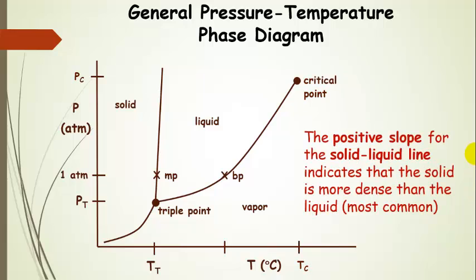So another important part of the diagram is the slope of the solid-liquid line. And you can see that the dependence on pressure is pretty weak, but when we have a positive slope, which is what we have here, that indicates that our solid is more dense than our liquid. And that's most substances. Most substances, the solid is more dense than the liquid.